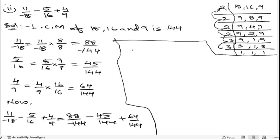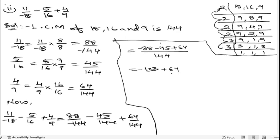Since the denominator is 144, we combine the numerators: −88 minus 45 plus 64. Adding −88 and −45 gives −133, then −133 plus 64 gives −69. So the answer for the second bit is −69/144.